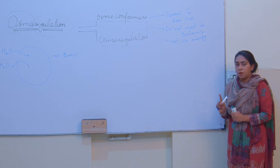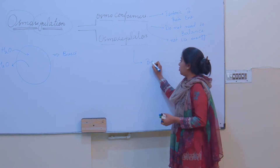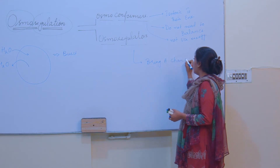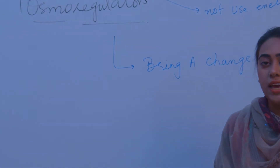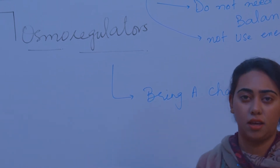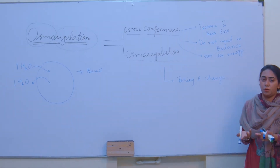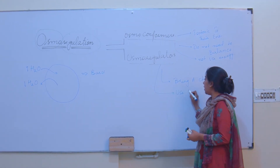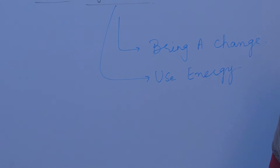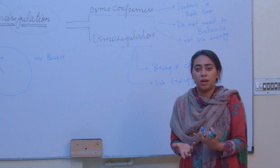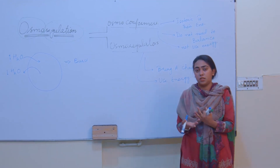If we talk about osmoregulators, they will regulate — they will bring a change. They will use energy for this because they have to initiate mechanisms to balance their water level. For example, the antidiuretic hormone (ADH) — why is it activated? Because the body detects that the water level is falling. Anti-diuretic hormones cause reabsorption of water in the nephron's distal convoluted tubules, convoluted tubules, and collecting ducts, making them more permeable towards water so water is retained inside the body.